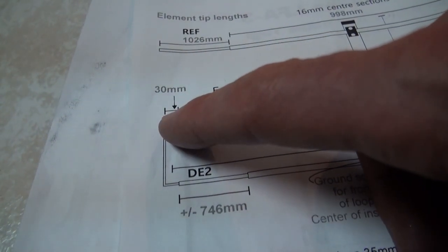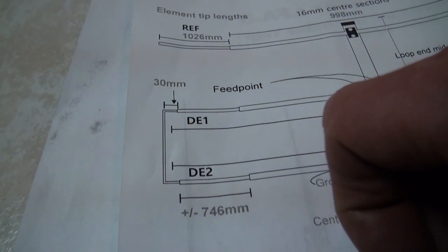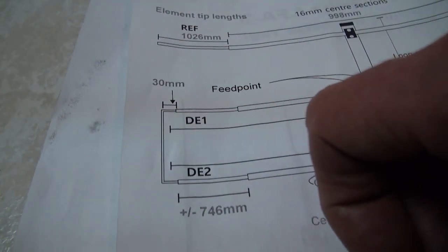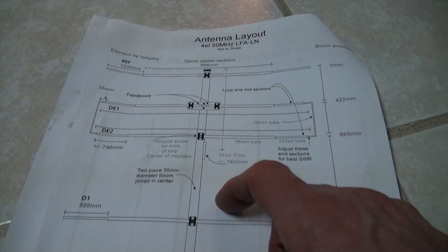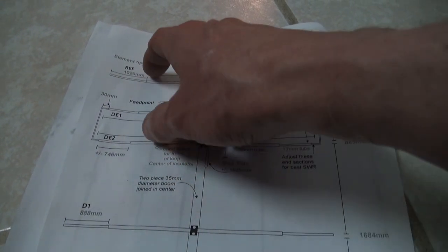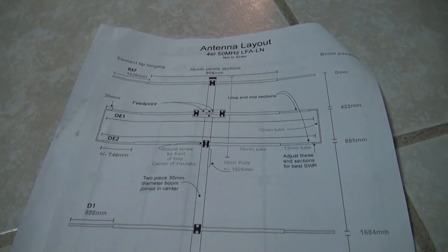The element tip length for the loop end for driven elements one and two is 30 millimeters, which is just over an inch. However, this is what will be adjusted to change your SWR depending on your installation. So, leave these somewhat loose until you have your SWR nailed down. Given the broadband nature of six meters, my suspicion is the suggested lengths given here in the assembly manual will probably work out just fine.